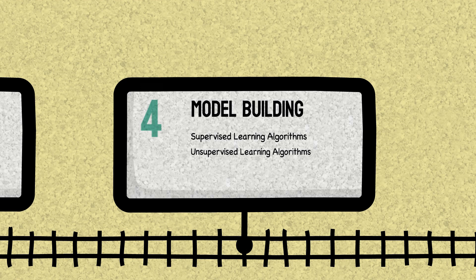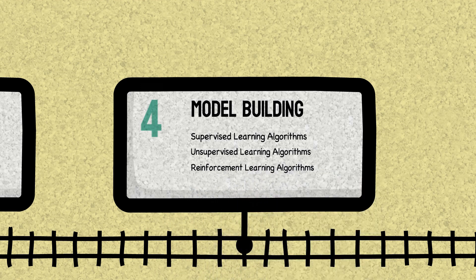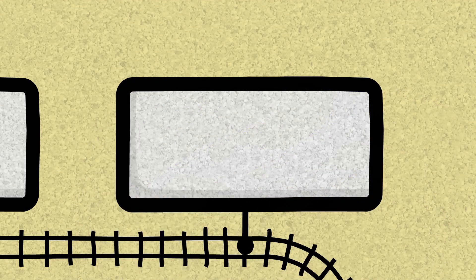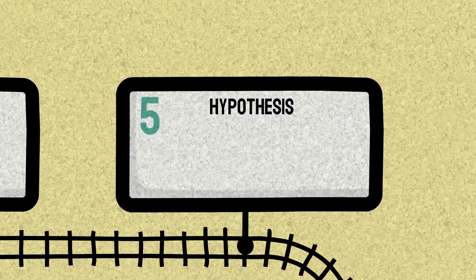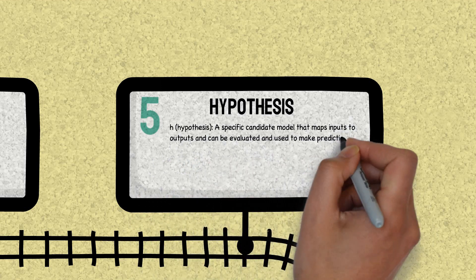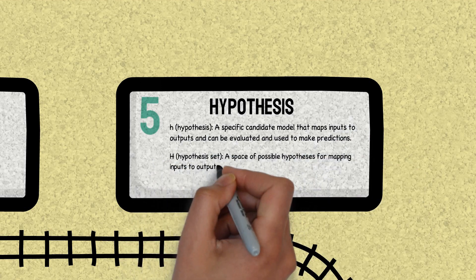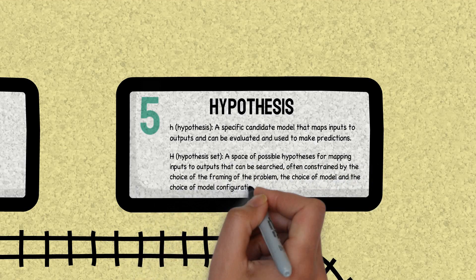Then finally we will discuss reinforcement learning which is based on principle where algorithm trains using system of reward and punishment. Once we select any model and try to train it, there are some statistical analyses that happen inside the algorithm where it selects the best parameter using hypothesis testing. Every single model created inside the algorithm is treated as hypothesis and the combination of all these models are called as hypothesis set or hypothesis space. Out of all those it chooses the best model.